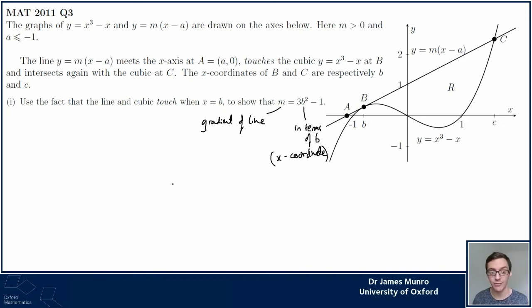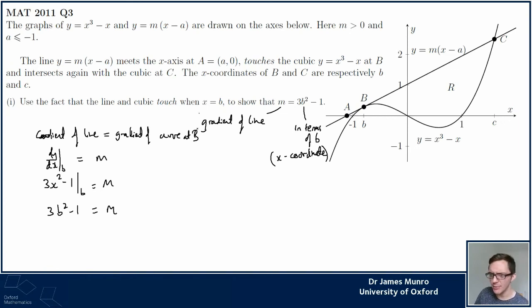The way I would link these things together is to think about the gradient of the tangent to the curve. That's related to the derivative of the curve. I'd say that m, because they touch, the gradient of the line equals gradient of curve at B. So the gradient of the curve is the gradient of x cubed minus x. So dy/dx equals m. dy/dx at B is 3x squared minus 1 at x equals B. It's equal to m. Gradients match up. 3b squared minus 1 equals m. I think that's worked out. I think the hard part here was understanding what the things in the expression meant.